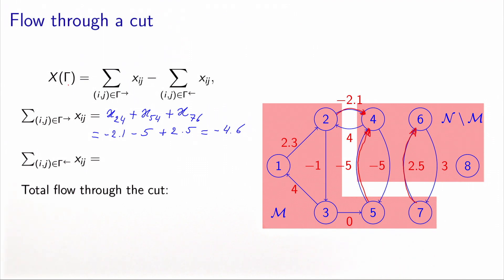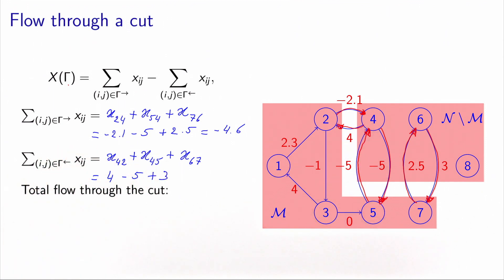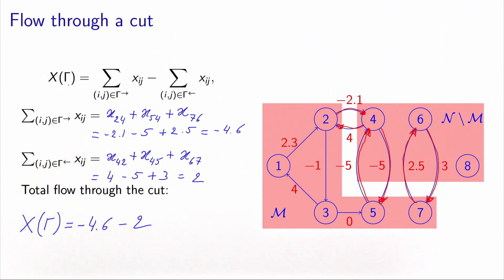Now we can do the same for the backward arcs. The set of backward arcs are (4,2), (4,5), and (6,7) — we have covered all the bridges between the two banks. This gives: 4, which is the flow on arc (4,2), minus 5, which is the flow on arc (4,5), plus 3, which is the flow on arc (6,7), for a total of 2. Applying the definition, the flow through the cut equals the forward arc total minus the backward arc total: minus 4.6 minus 2, which equals minus 6.